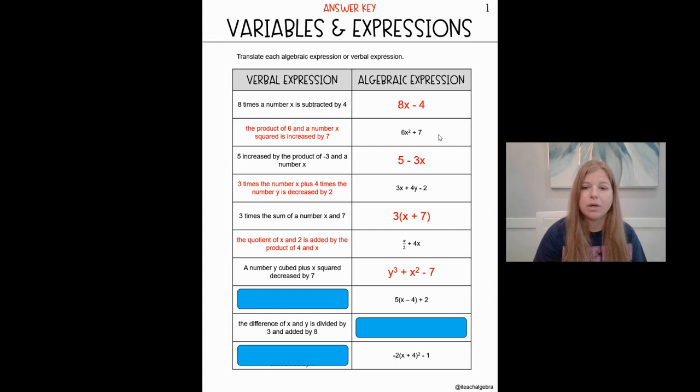Next one. I see those parentheses there again. Just like we had in the problem up here that said 3 times x plus 7. That was 3 times the sum. If I see a difference, that would look like 5 times the difference of x and 4, and then added by 2. So that's what I wrote. 5 times the difference of x and 4 is added by 2.